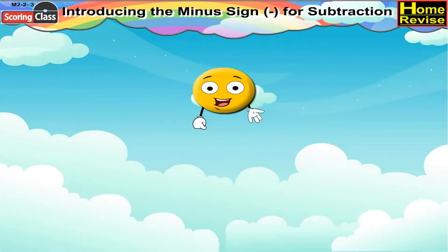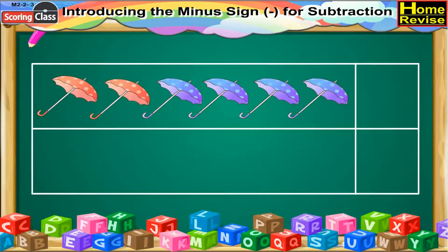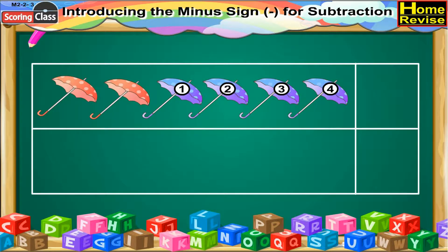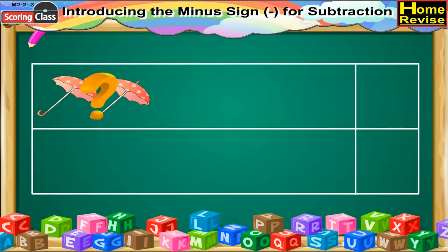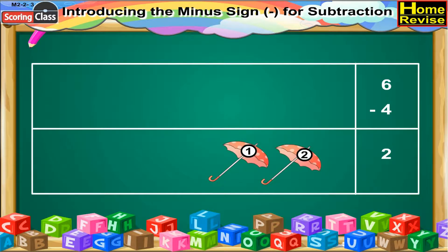Introducing the minus sign for subtraction. Now, there are six umbrellas. Out of the six umbrellas, four umbrellas are removed. So, how many umbrellas are left? That would be six minus four. So, two umbrellas are left.